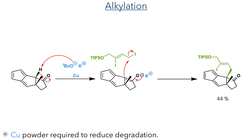In the next step, the position alpha to the ketone was alkylated. This reaction used potassium tert-butoxide to form the thermodynamic enolate on the more substituted side of the ketone. This then attacked an alkyl iodide, with the reaction occurring on the less sterically hindered convex side of the molecule. Despite significant optimisation, they could only obtain the product in a 44% yield.